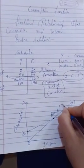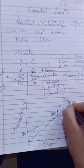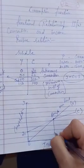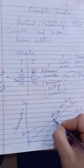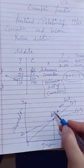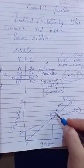Students often think that wherever two lines intersect, it must be an equilibrium point — but no, that is not always the case. In this diagram, the intersection of C and Y is the Break-Even Point, not an equilibrium point.